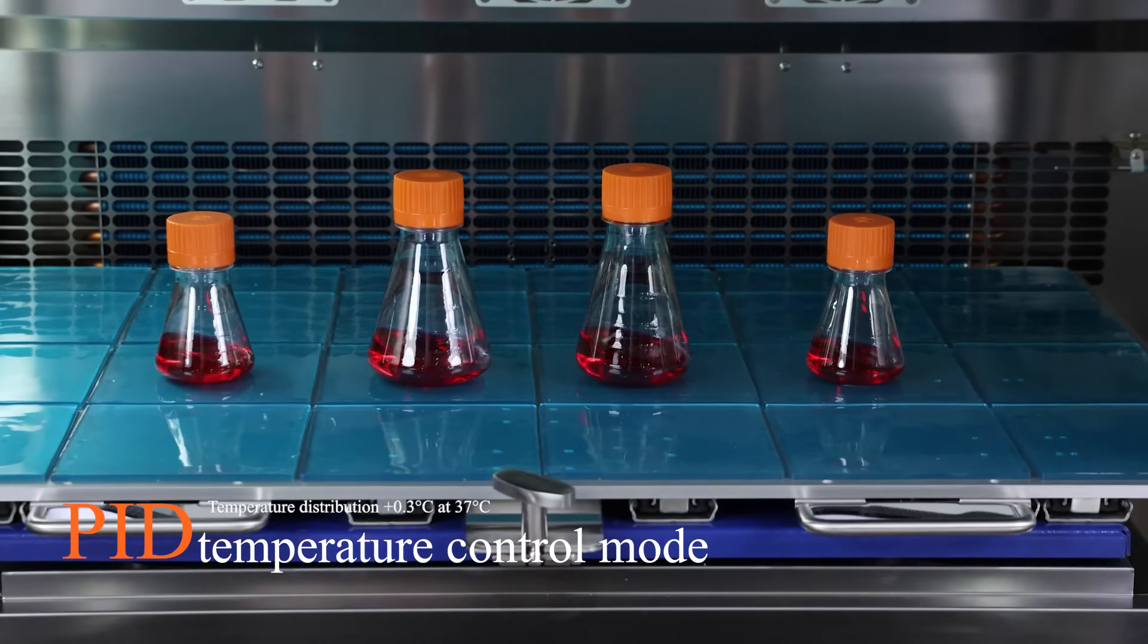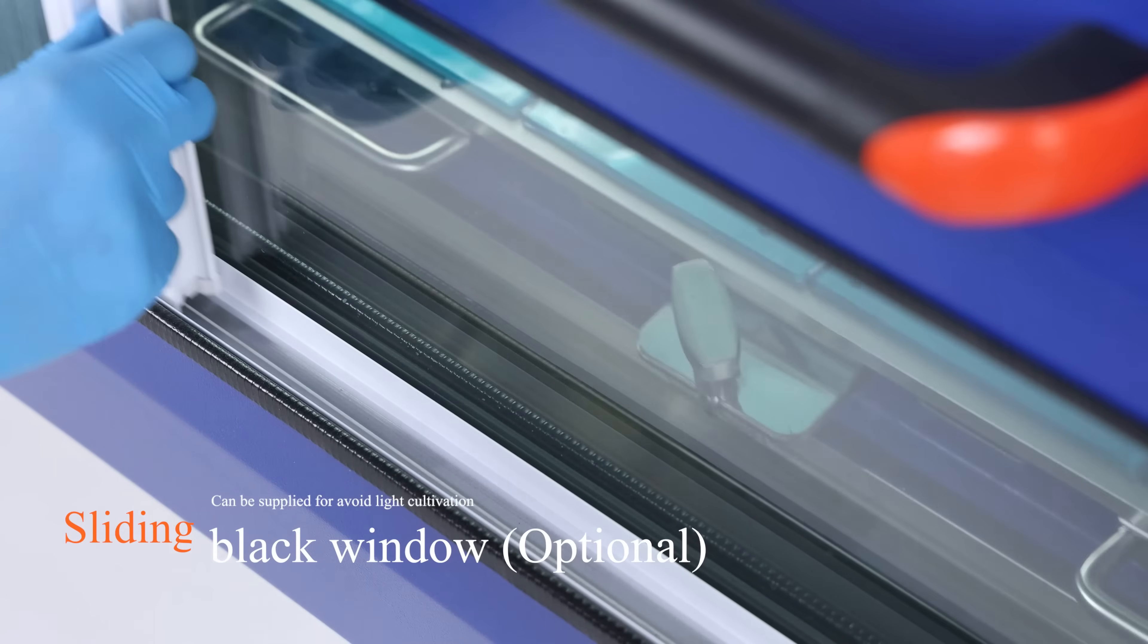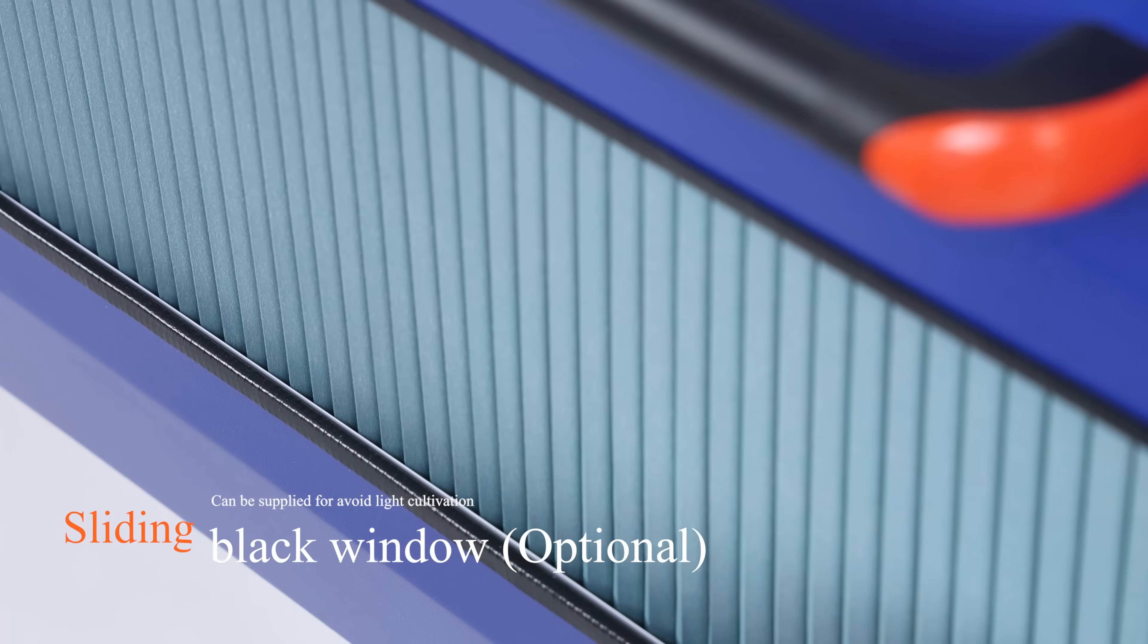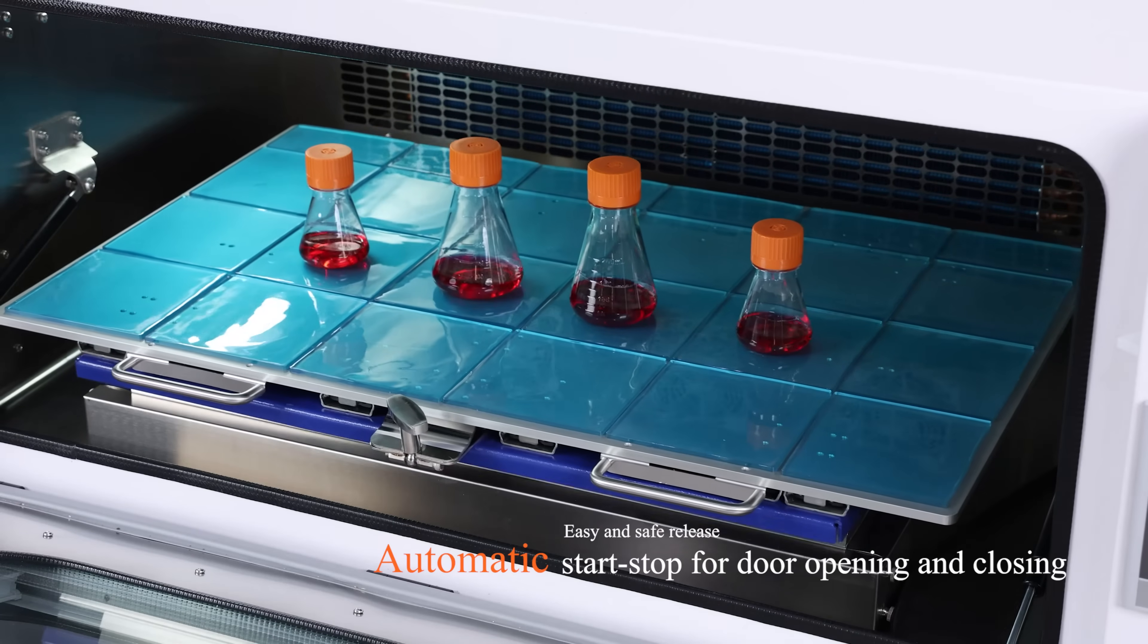High-precision temperature control mode, temperature distribution plus or minus 0.3°C at 37°C. Sliding black windows can be supplied for avoiding light cultivation. Automatic start-stop door opening and closing, easy and safe release.